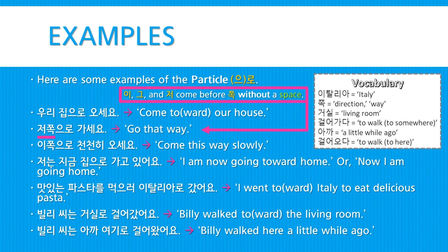Note that 이, 그, and 저 will come before the word 쪽 without a space. 이쪽으로 천천히 오세요 — Come this way, slowly. 저는 지금 집으로 가고 있어요 — I am now going toward home, or more naturally, now I'm going home.